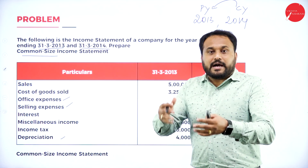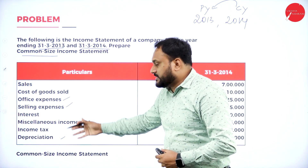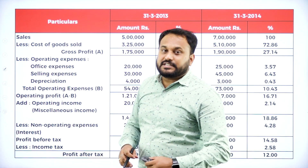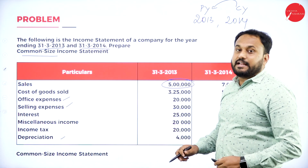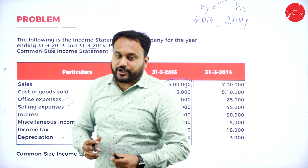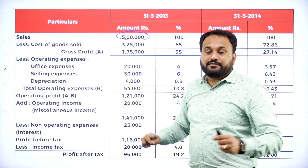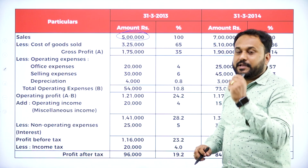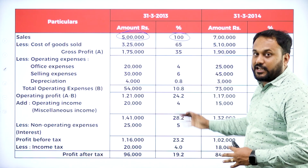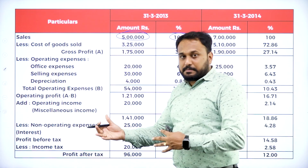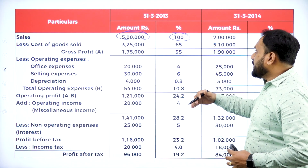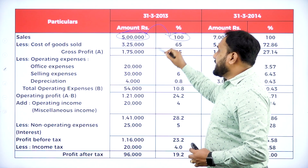I've given you the answer. The first item is sales. Sales of 2013 is 5 lakh. Every time you go with the income statement, sales is always the base value. So the percentage for the base value is always 100 percent. Make a column with: particulars, 2013 amount in rupees, 2013 percentage, 2014 amount, and 2014 percentage — that is what the common size income statement looks like.